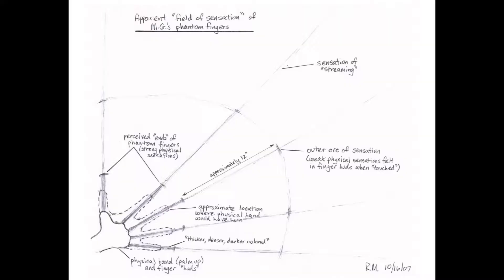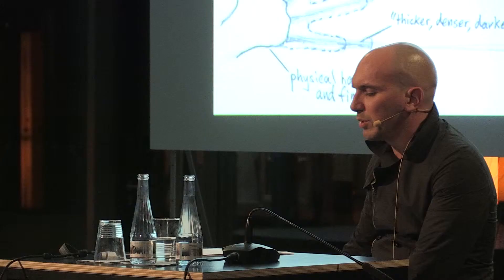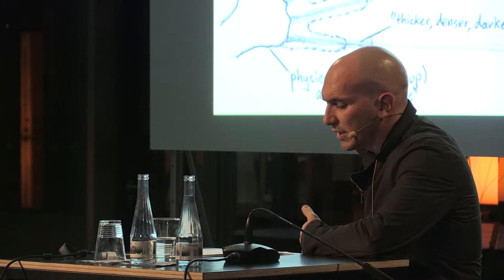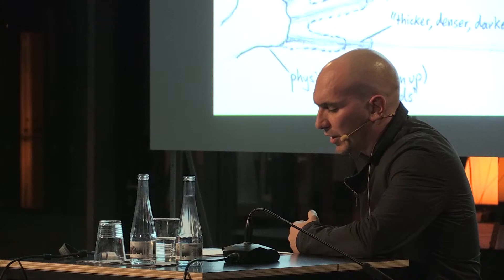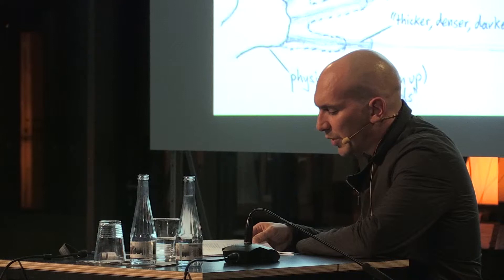Phantom limbs do have, in a few cases, abnormal dimensions. This picture is a drawing by Robert and Suzanne Mays of the apparent field of sensation around the physical left hand of patient MG. The fingers extend in the outside space, far from the amputated hand. This is called the mind limb — the brain projects far beyond the previous coordinates of the missing limb. It is the projection of a brain trying desperately to fill in the void and conquer the environment around.